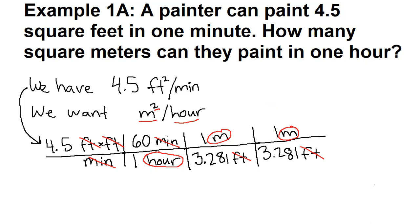Now we see that the problem itself is finished with all of the setup. The last part is the calculation part where we take everything that was on top: 4.5 times 60 times one times one, and everything on the bottom: one times 3.281 times 3.281. The key to remember for the calculation part of this is that we do need the parentheses around the bottom. Otherwise, your calculator will do something that you are not expecting it to. Our calculator tells us that it's 25.0813728.